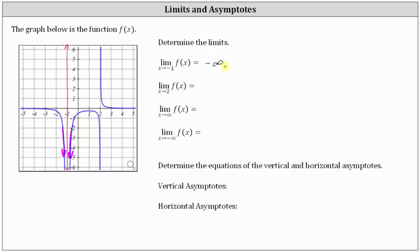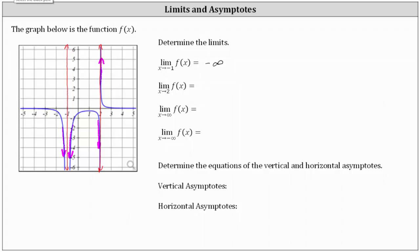Next, we have the limit of f of x as x approaches two. Let's sketch a vertical line at x equals two. As we approach x equals two from the left, notice how the function values decrease without bound. And as we approach x equals two from the right, notice how the function values increase without bound. Because we're not approaching the same function value from the left and right, the limit does not exist, which means we enter DNE.